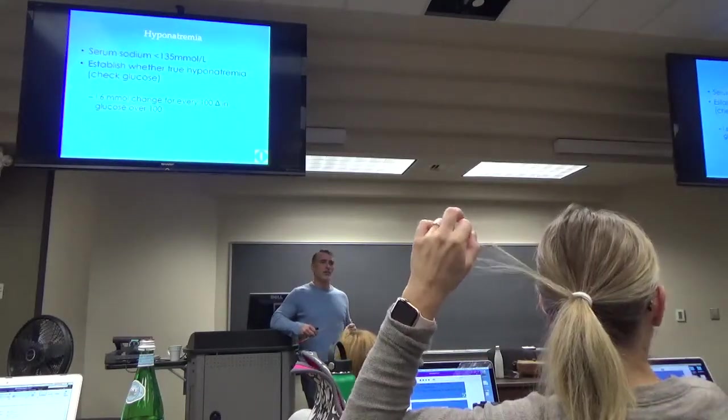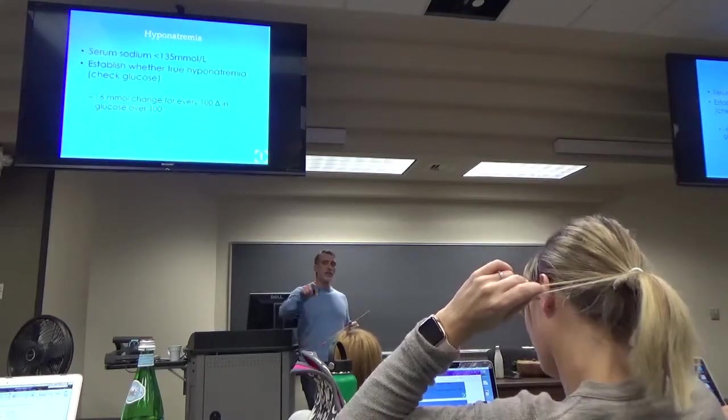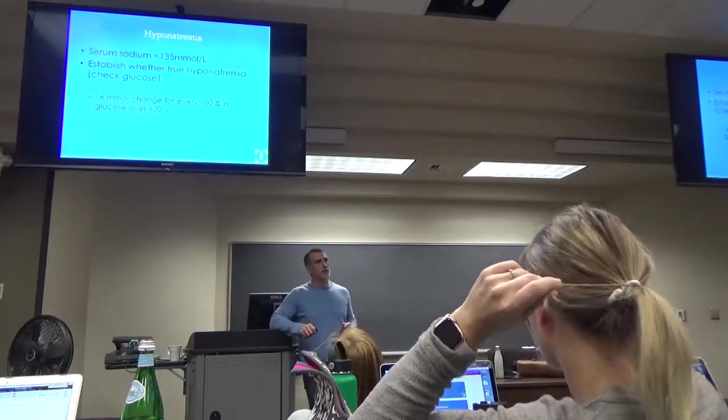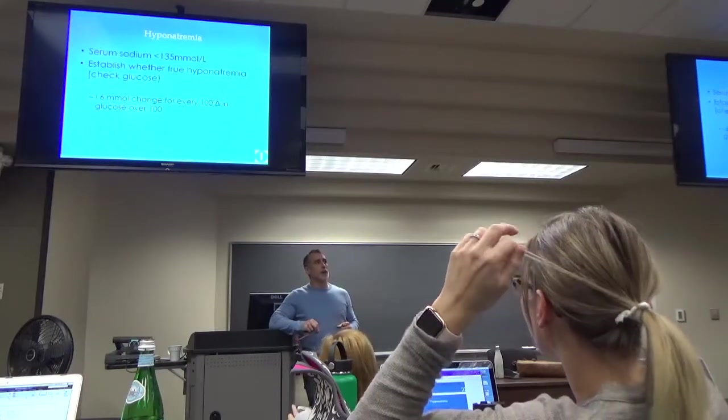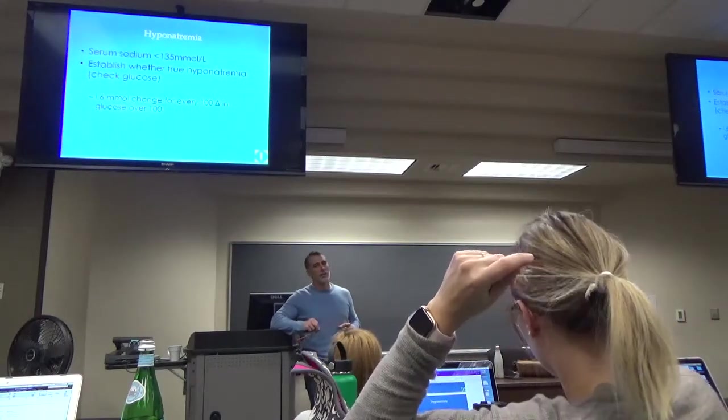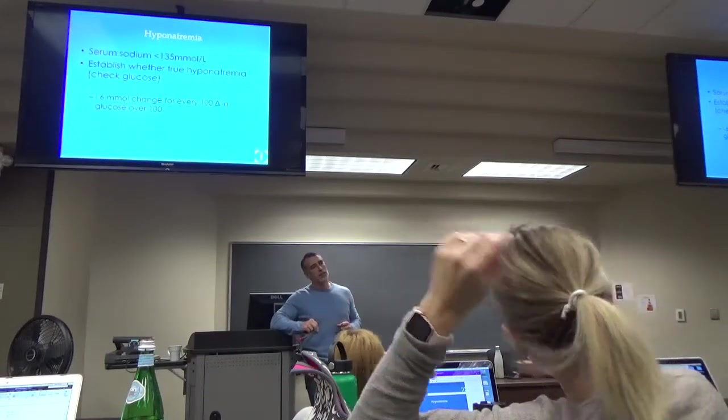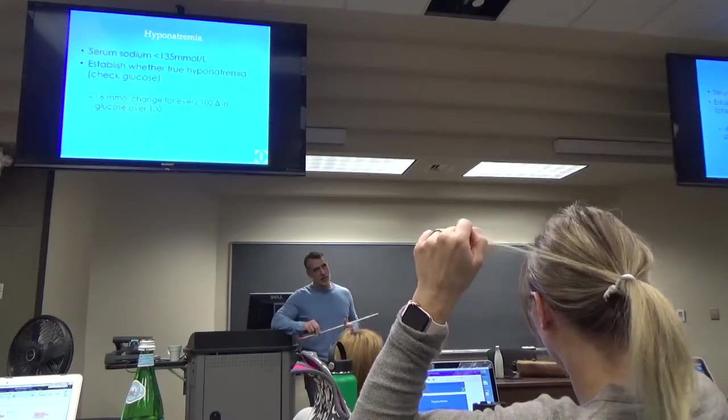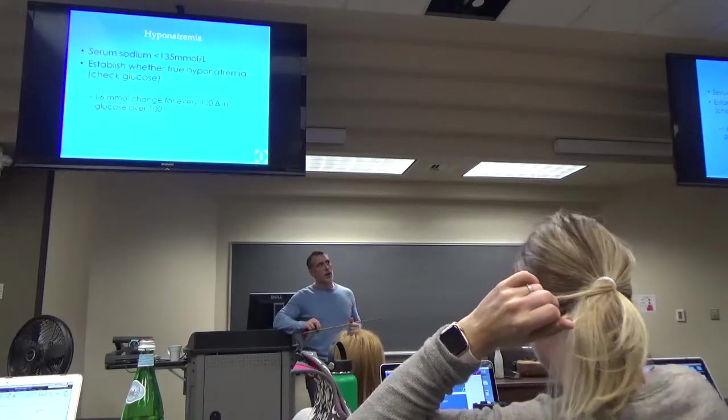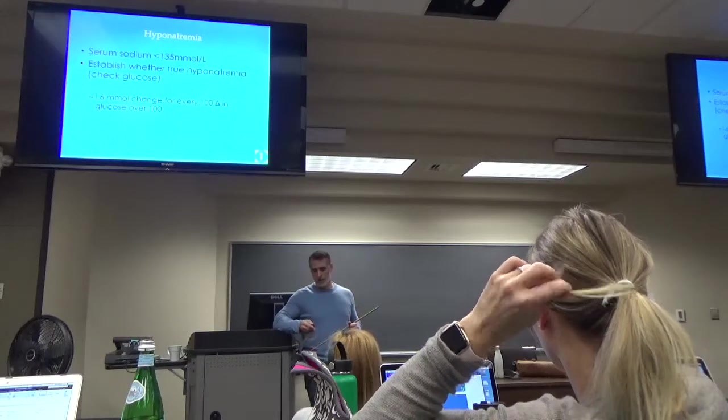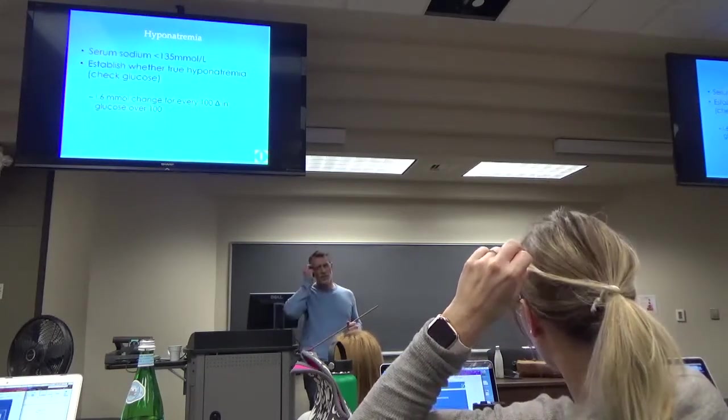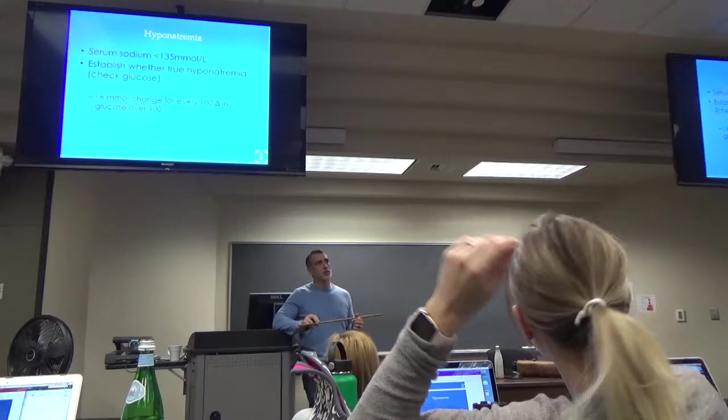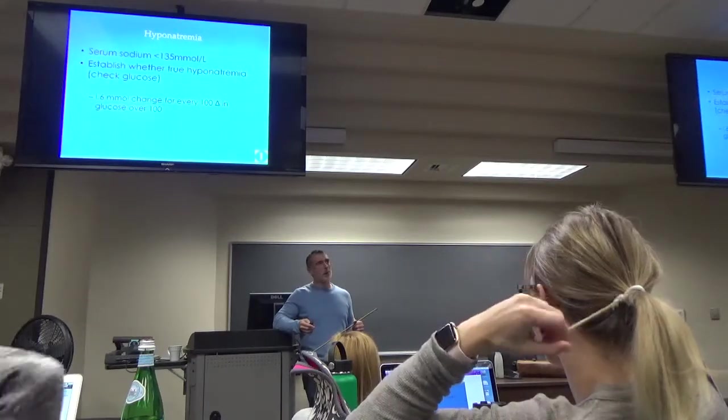So, hyponatremia is a serum sodium less than 135, and you mentioned you needed to correct for what? Glucose. Glucose, right. So, just, again, I'm not a nephrologist, I'm just an ER doctor, so you get about a 1.6 millimole change for every 100 milligrams per deciliter, your glucose is over 100. There's a more complicated formula, I'm sure, but that's what I can do in my head. So, about 1.5 for every 100 over 100 to correct it. Remember, sodium's usually extracellular, so it's the major osmotic pull outside of protein in your serum until glucose gets involved and then it can overwhelm it and that's how you get your pseudohyponatremia.